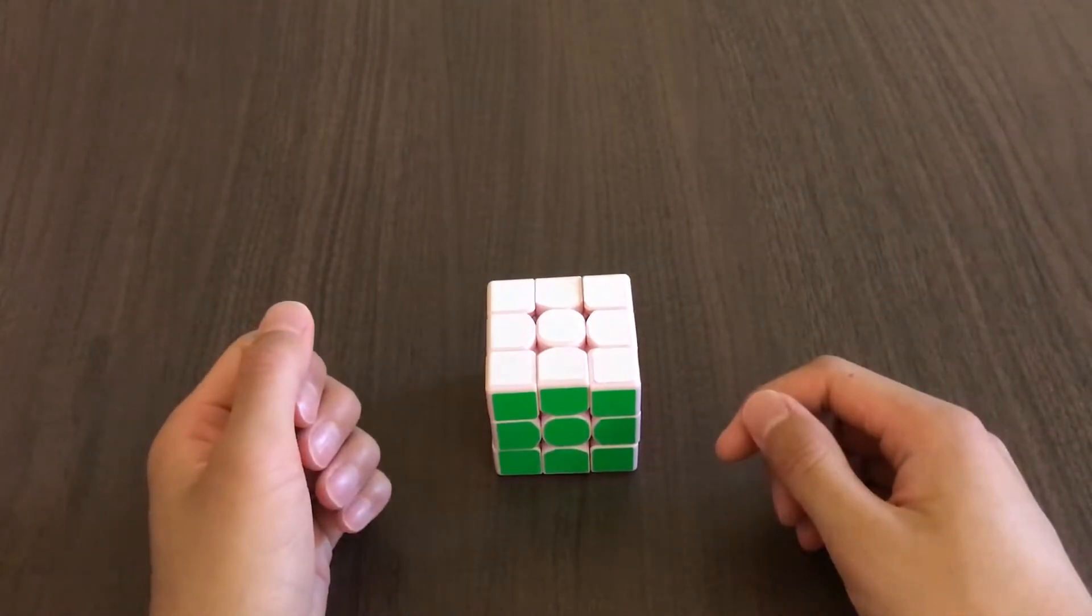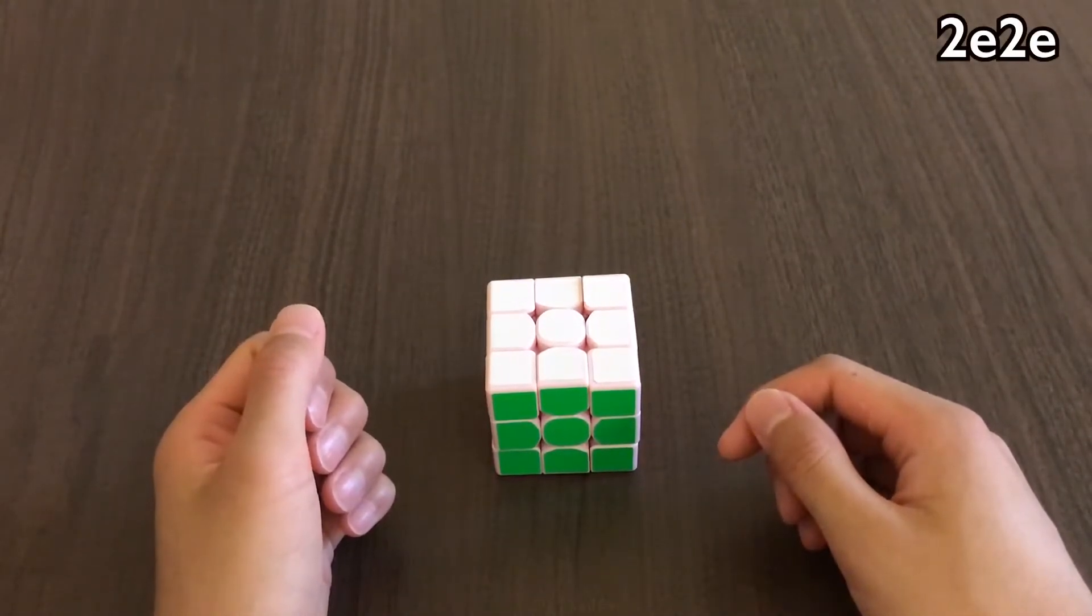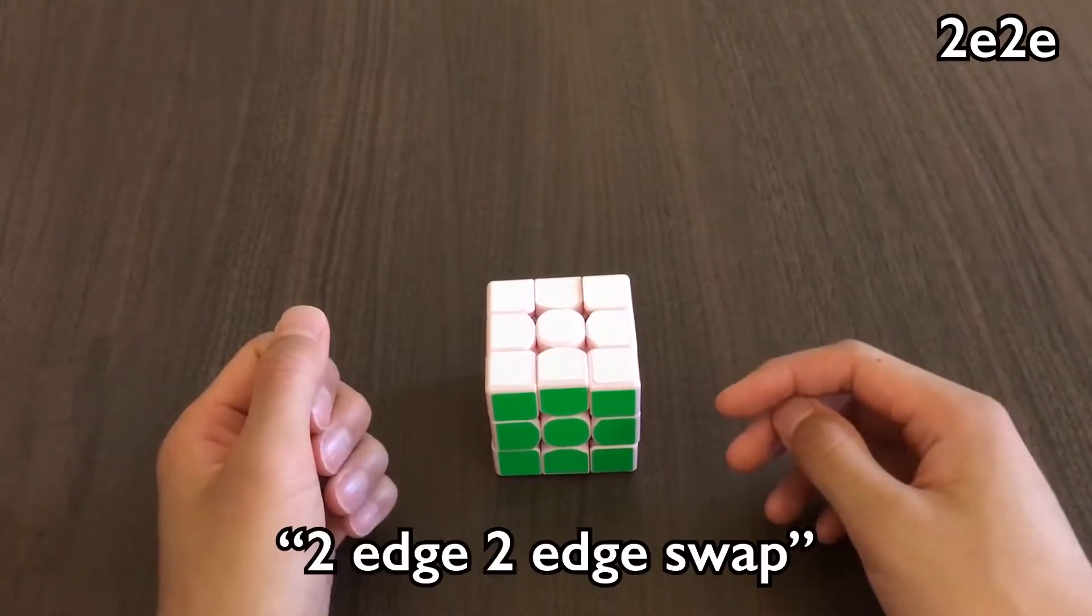Hey guys, today I'm going to talk about an advanced alg set called 2E2E. 2E2E is short for two-edge, two-edge swap.